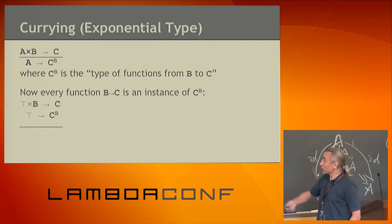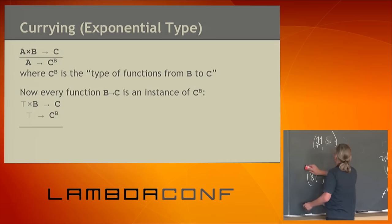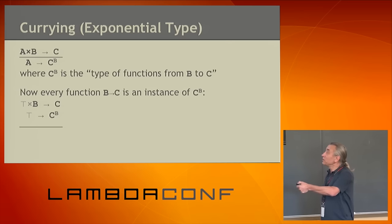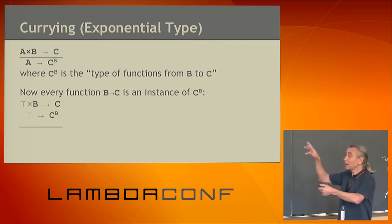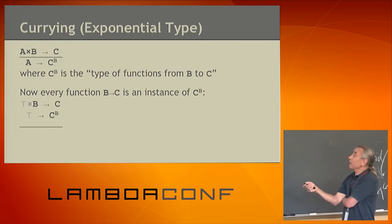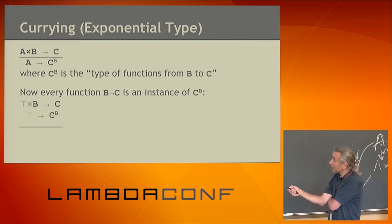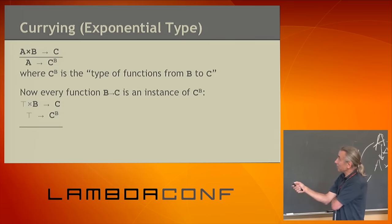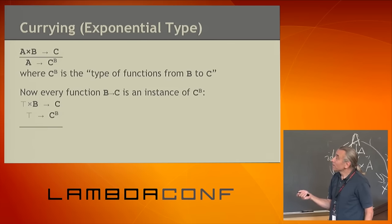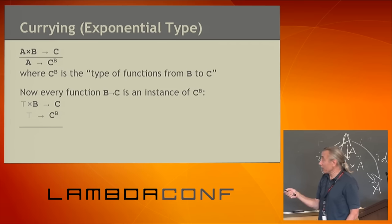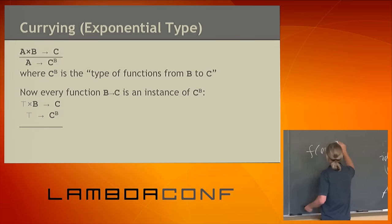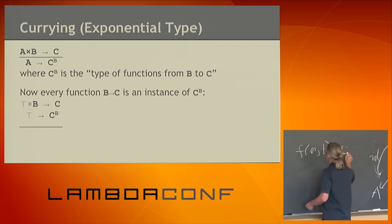Now the exponential type. We use product on the left side of a function. Given a function from A cross B to C, having such a function is the same as having a function into the type C to the power of B — called the exponential type, or the type of functions from B to C. The operation is currying. A special case: when the left component is unit, unit cross B is essentially the same as B, so any function from B to C is equivalent to having a function into C to the power of B.